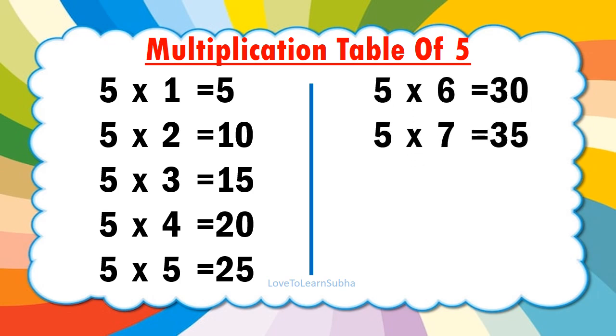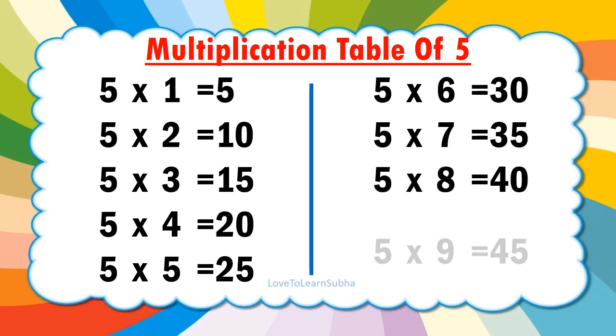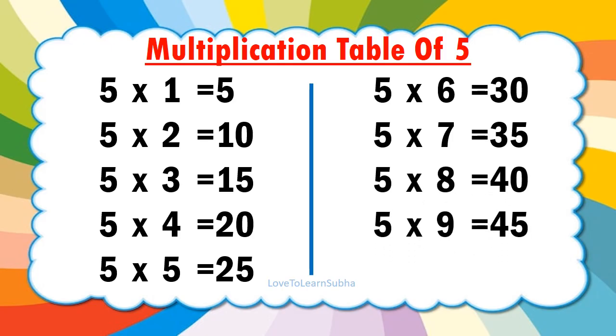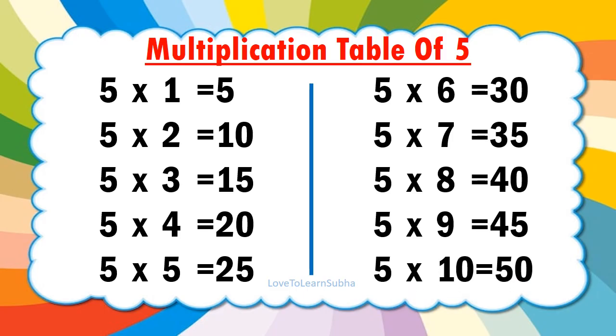5 7s are 35, 5 8s are 40, 5 9s are 45, 5 10s are 50.